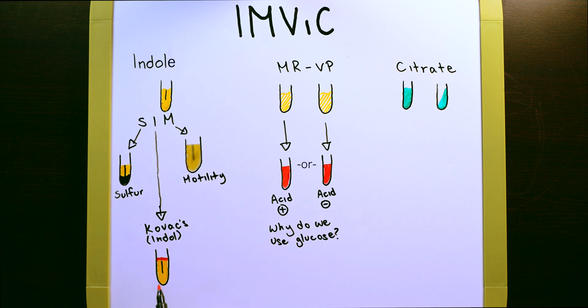If you have red, when you add COVAX reagent at the top of the test tube, this means that you have a positive indole test, meaning that your bacteria has the enzyme tryptophanase, which allows it to break down the protein tryptophan.